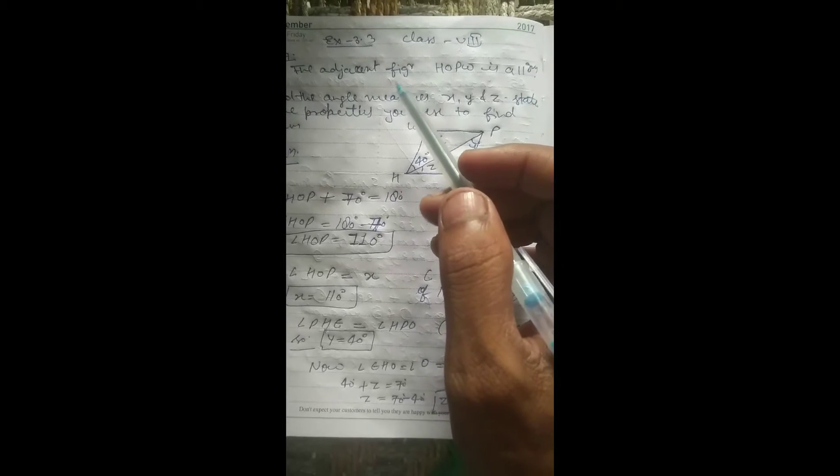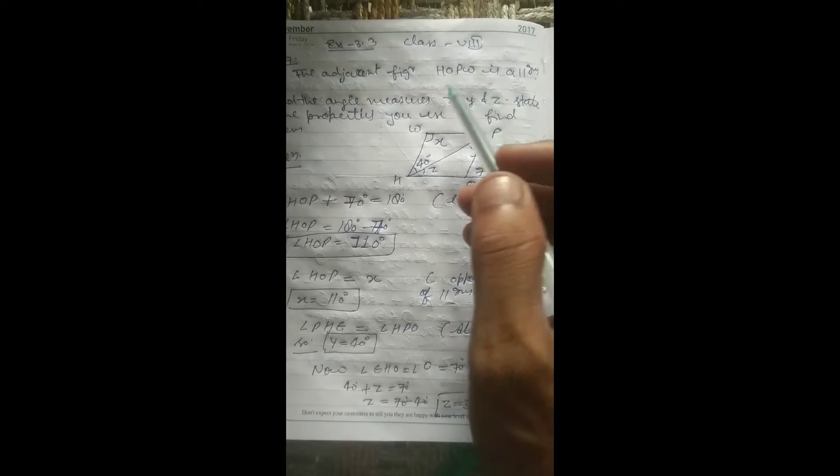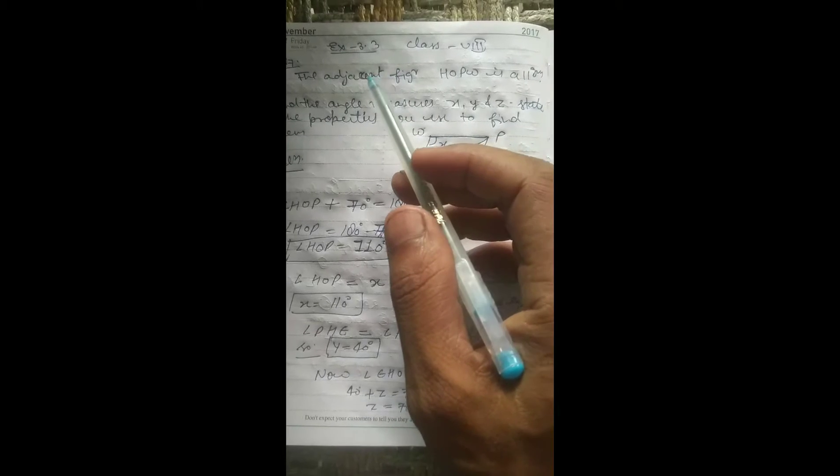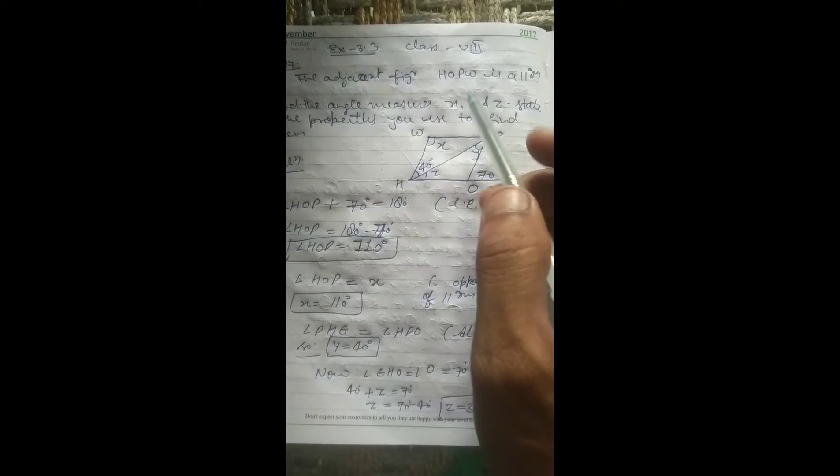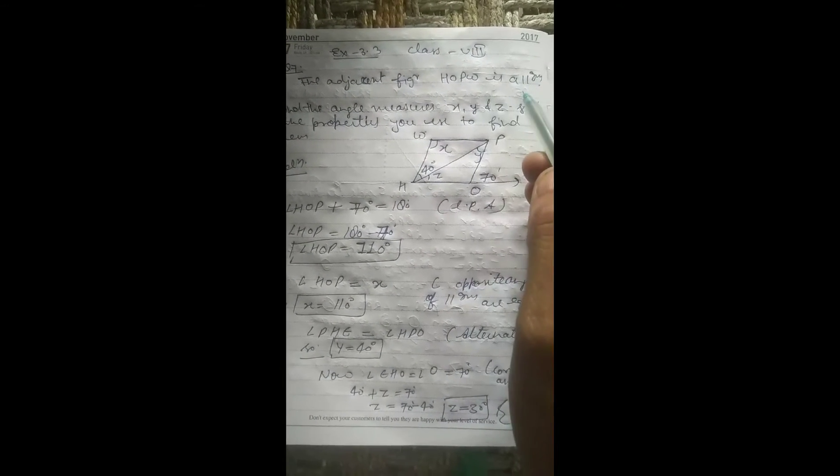Hello students. Today we are going to discuss math subject class 8, exercise 3.3, question number 7. The adjacent figure is a parallelogram.